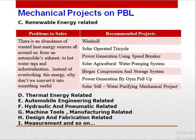The next area involves projects related to renewable energy. There is an abundance of wasted heat energy all around us, such as from automobile exhaust, hot water taps, and industrial processes. Instead of overlooking this energy, we can convert it into something useful. Recommended projects include: a windmill, a solar-operated tricycle, power generation systems, a water pumping system, biogas systems, power generation by gym equipment, and solar power systems.